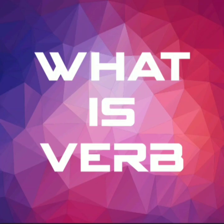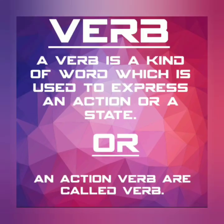What is a verb? A verb is a kind of word which is used to express an action or a state. Actions like eating, drinking, sleeping, getting up, talking — all are called verbs. The process by which we perform an action is called a verb.